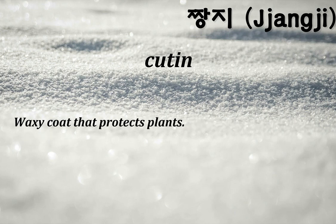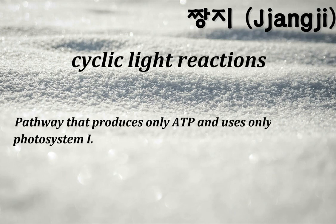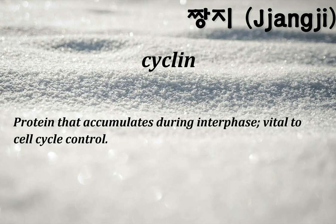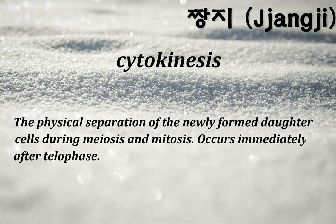Cutin: a waxy coat that protects plants. Cyclic light reactions: pathway that produces only ATP and uses only photosystem I. Cyclin: a protein that accumulates during interphase, vital to cell cycle control. Cytokinesis: the physical separation of the newly formed daughter cells during meiosis and mitosis; occurs immediately after telophase.